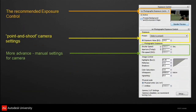In 3ds Max Design, the exposure control is called Mental Ray Photographic Exposure Control — the recommended one for Mental Ray rendering. If you're more of a point-and-shoot type, you can choose from presets and fine-tune the exposure value. If you're more advanced, you can adjust shutter speed, aperture, and film speed. It's really up to you depending on your photography knowledge.